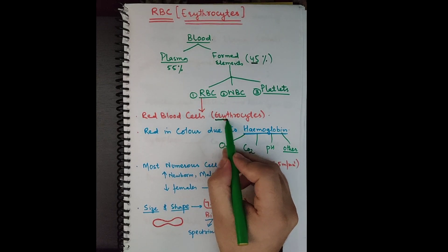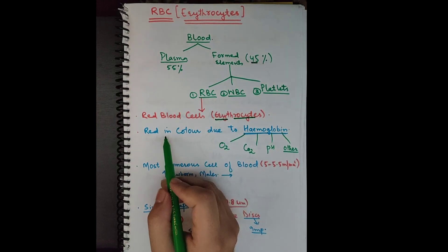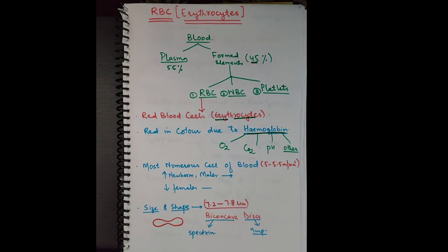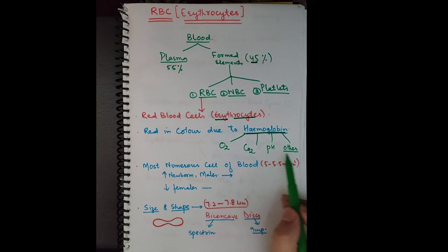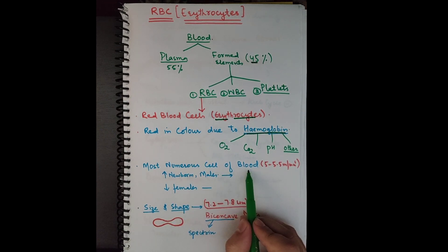Red blood cells are also known as erythrocytes. These red blood cells are red because they possess a red color pigment called hemoglobin. This hemoglobin is the most important part of RBCs because all the functions of RBCs are carried by this hemoglobin molecule. In a nutshell, hemoglobin helps in oxygen transport, carbon dioxide transport, maintenance of the pH of the blood, and many other functions.